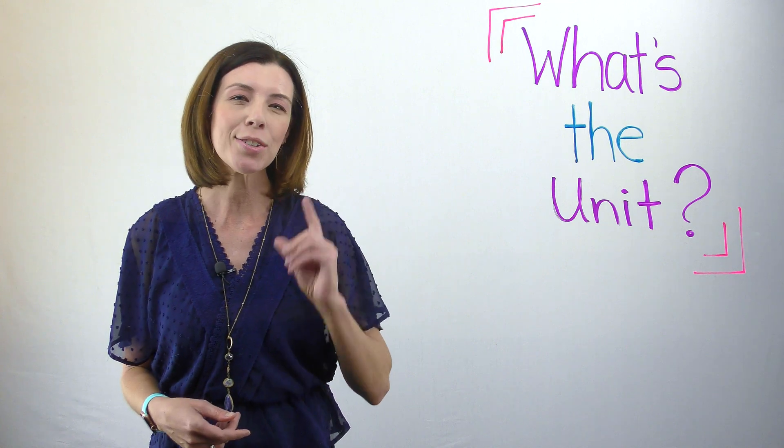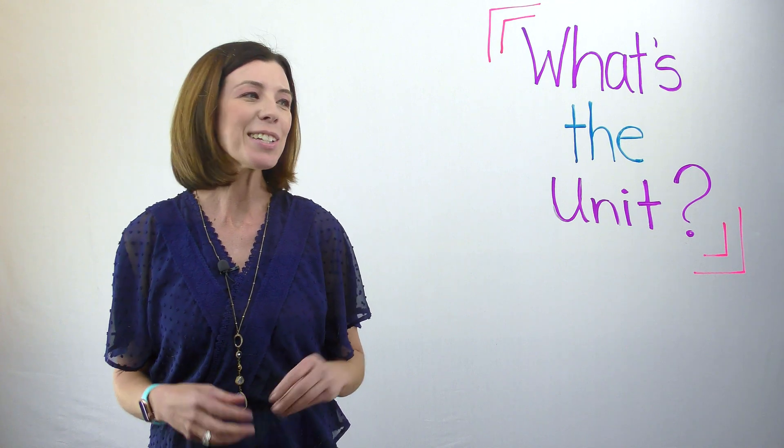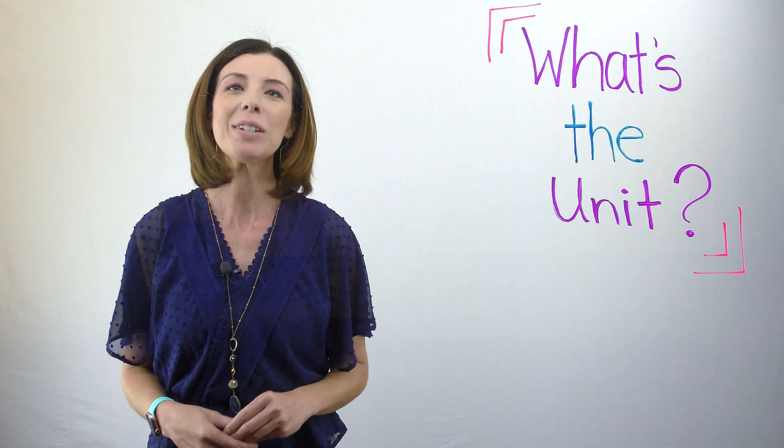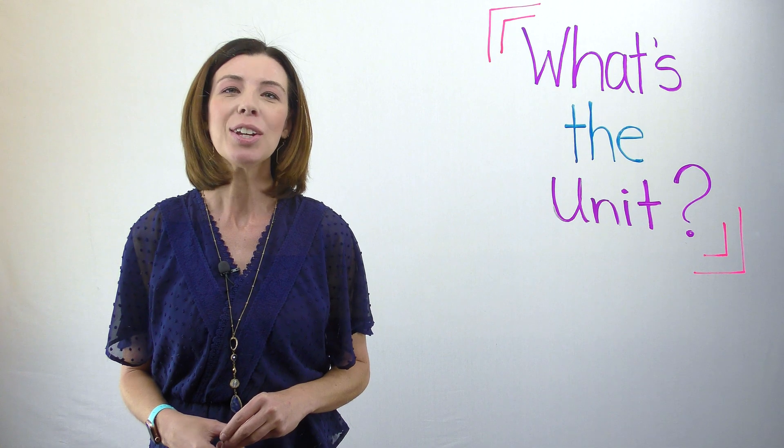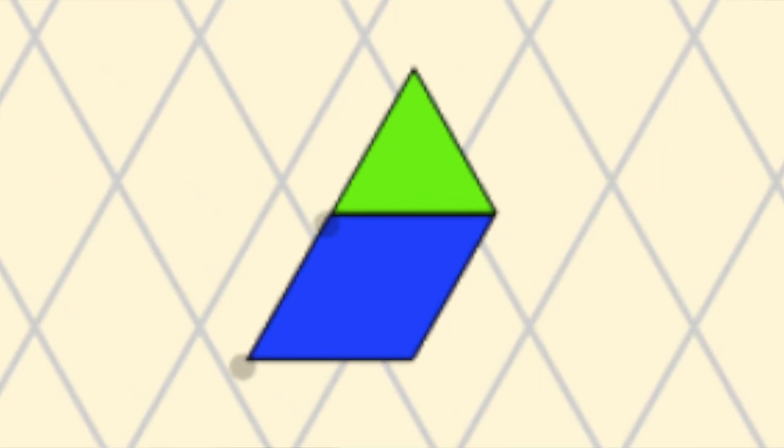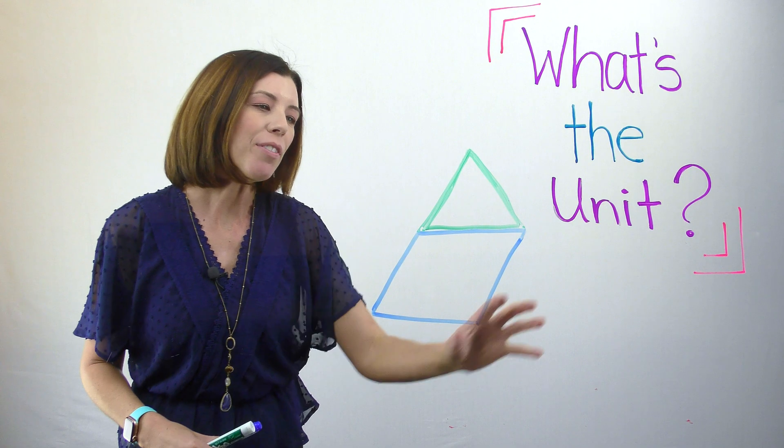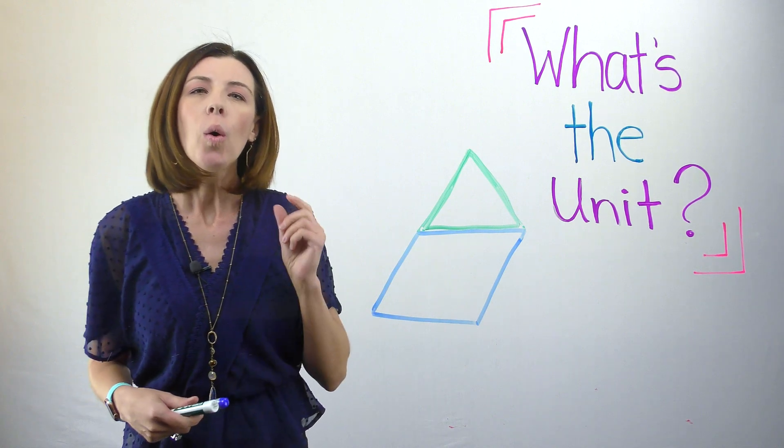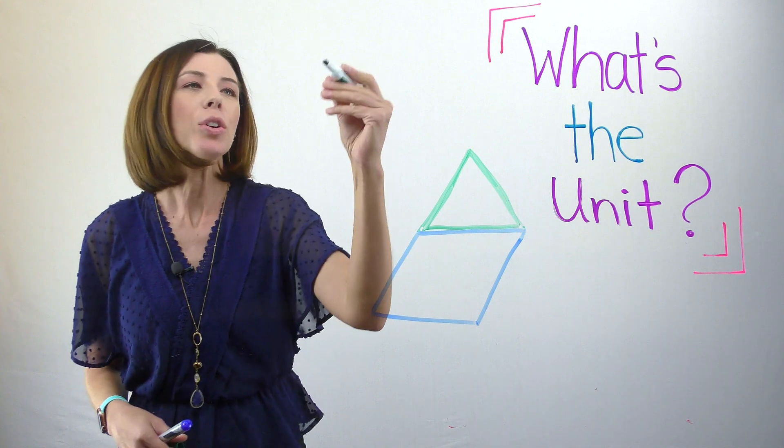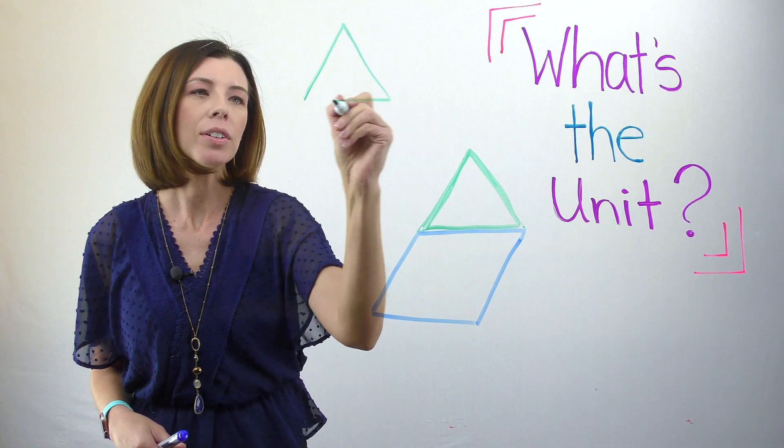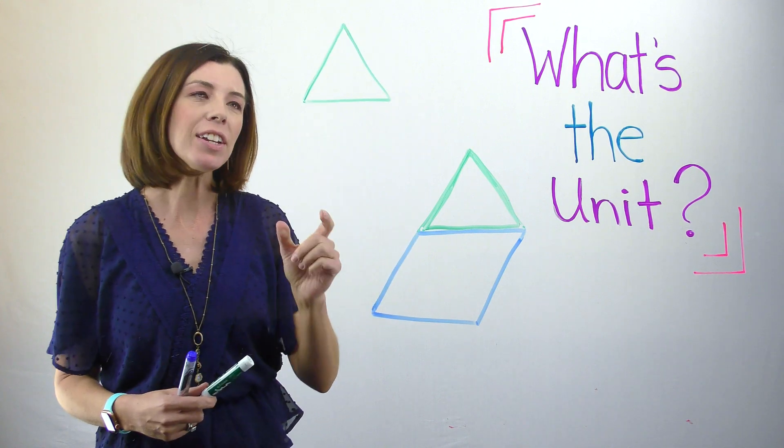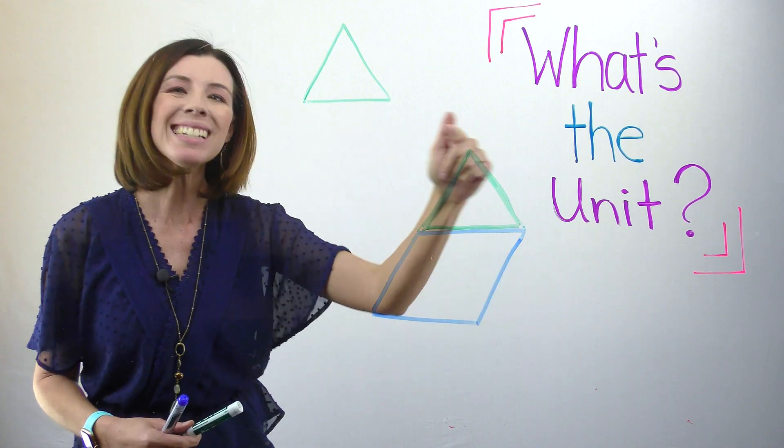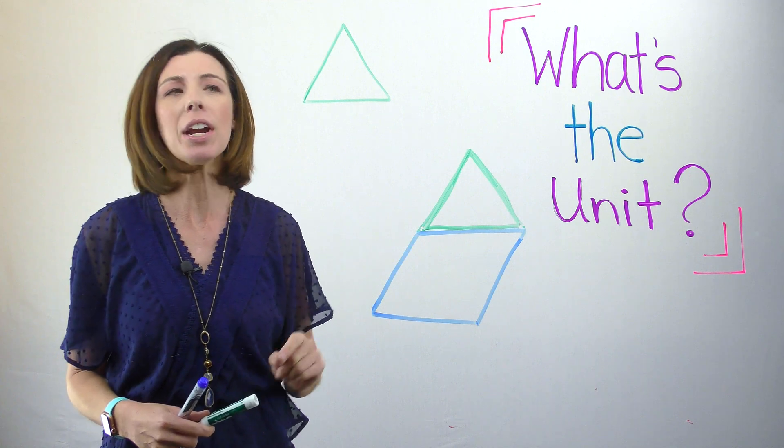Now what I want to do is I want to change the unit. And this lesson is called what's the unit because if you are not paying attention to the unit, you are going to be confused. So now I'm going to switch the unit to this combination. So if this combination is our unit, then I want to know what fractional part is the green equilateral triangle. I need to figure out how many green equilateral triangles fit inside of my unit. Notice that the unit has now changed.